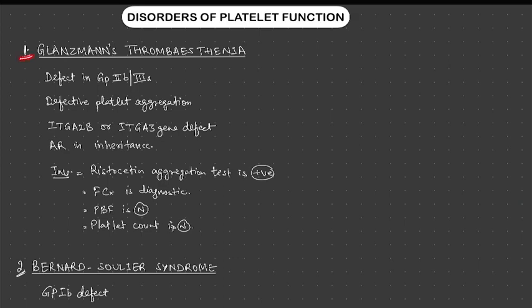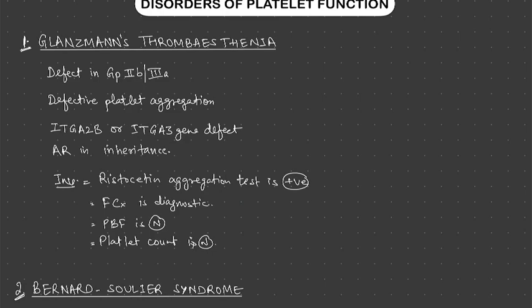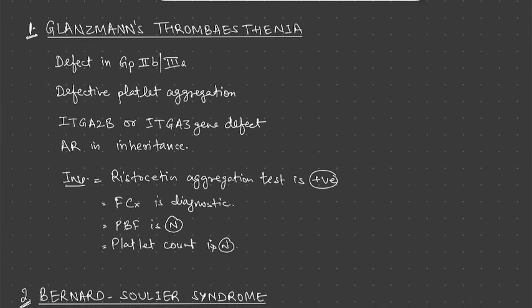First is Glanzmann's thrombasthenia. GP2B3A is a very important factor which helps in platelet adhesion and aggregation. If there is a defect in GP2B3A, there will be a defect in platelet aggregation. The genes involved are ITGA2B or ITGA3. It is autosomal recessive in inheritance. The genes involved and their mode of inheritance are important to remember.